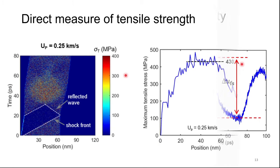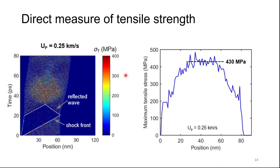Using MD simulation, we can obtain the stress state of the sample at every point in time. This is the time-position plot of the tensile stress. Initially this is the shock front, which then reflects back as a release wave. Another tensile release wave comes from the other side, and when these two meet, they create a very high tensile stress in the sample. Using this type of plot, we can obtain the maximum tensile stress of the sample at different locations, and based on this we can determine the tensile strength.